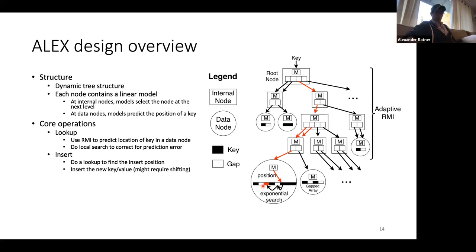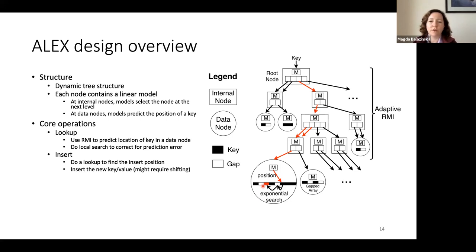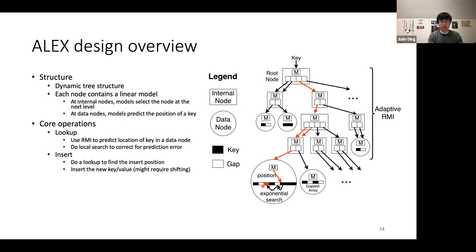A question was raised about how ALEX compares to a standard B+ tree in terms of fan-out, number of nodes, and node size. In general, ALEX's fan-out is much larger and the nodes themselves are on average much larger, meaning the overall structure is more compact with fewer nodes and a lower tree depth. This leads to lower traversal time as well. There's a specific reason why data nodes end up being quite large, which will be explained in the following slides.